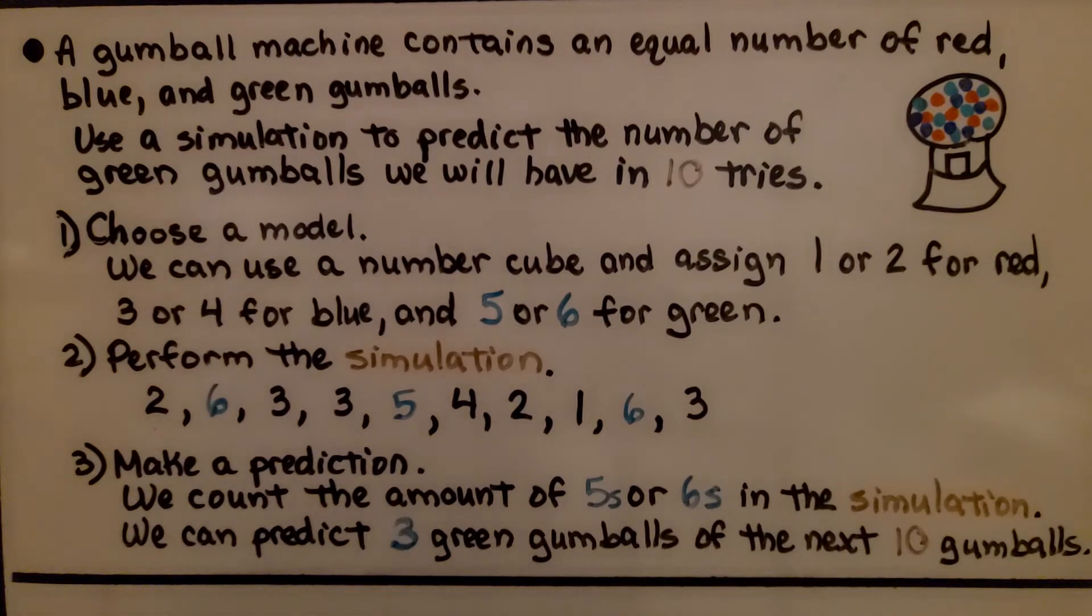Let's try another. A gumball machine contains an equal number of red, blue, and green gumballs. Use a simulation to predict the number of green gumballs we will have in ten tries. First thing we do is choose a model. Now, we have three different colors.